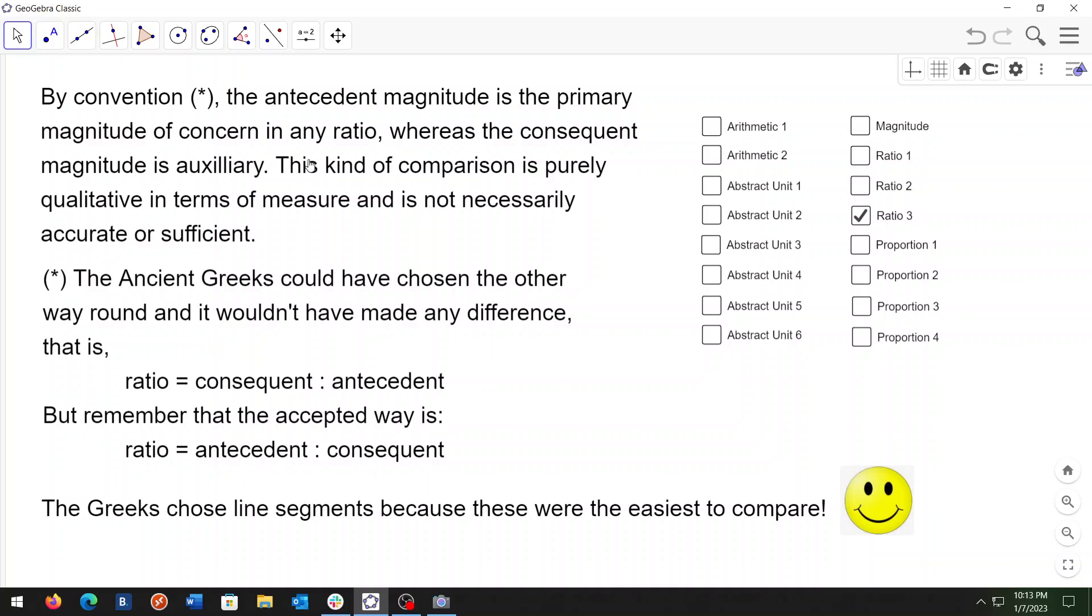The ancient Greeks could have chosen the other way around and it wouldn't have made any difference. They could have had the consequent appear before the colon and the antecedent after, but remember that the accepted way is that for a ratio, they compare the antecedent to the consequent.